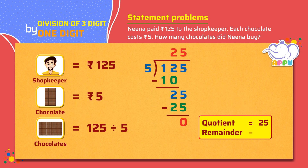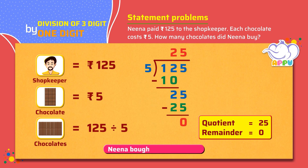And 0 is the remainder. Neena bought 25 chocolates. That's really nice!